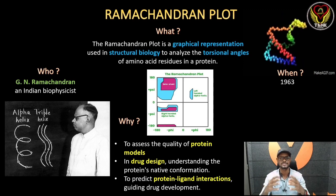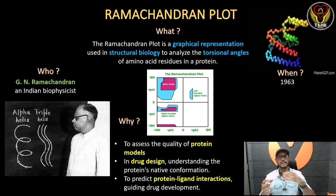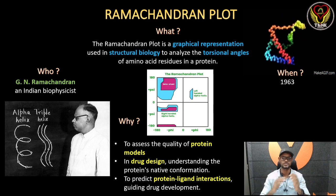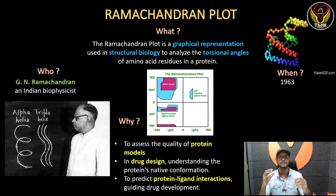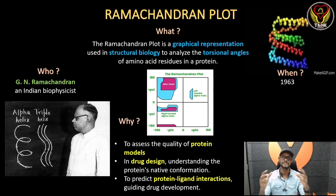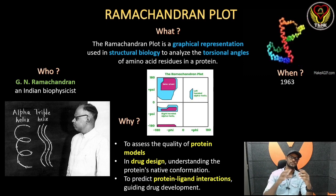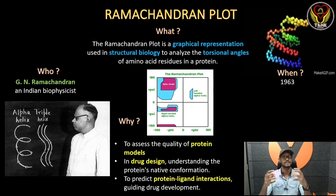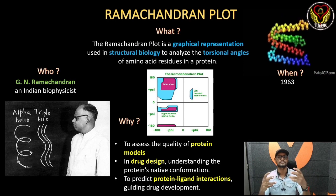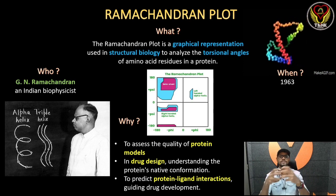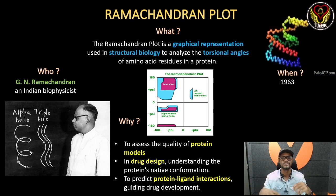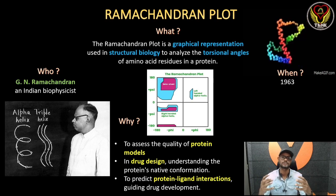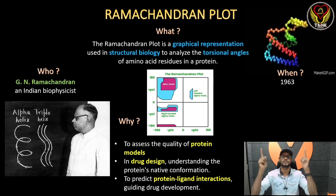The graph designs are used in drug discovery. We use the structure — it is used in understanding ligand interactions during drug development. A protein reacts with a ligand, and the ligand is a substrate. So we can predict and study this. This is the Ramachandran Plot.